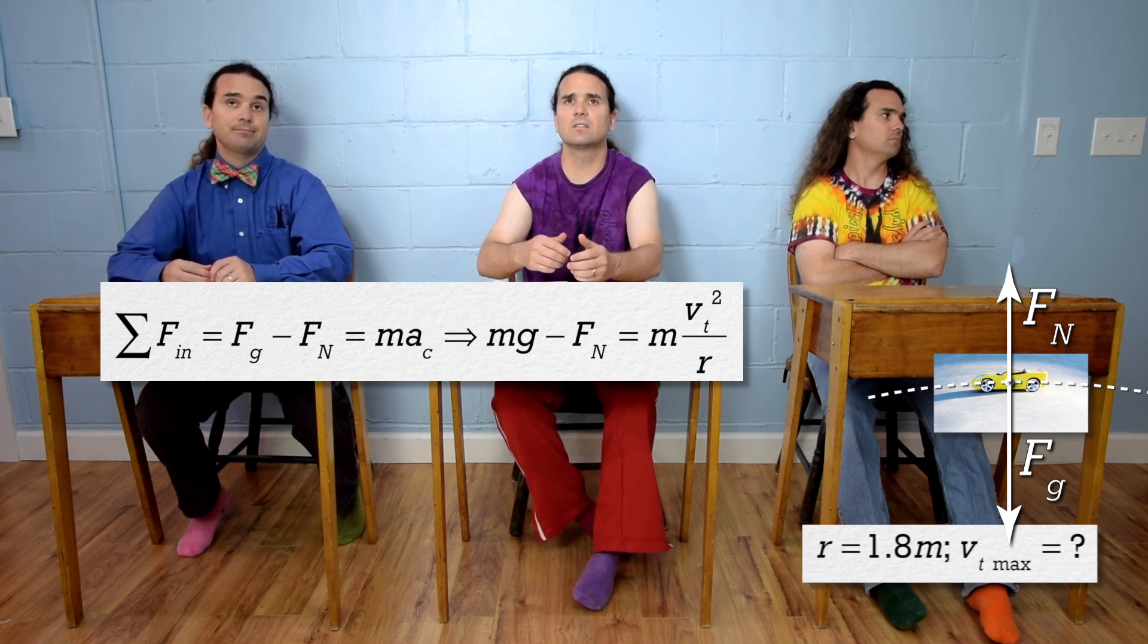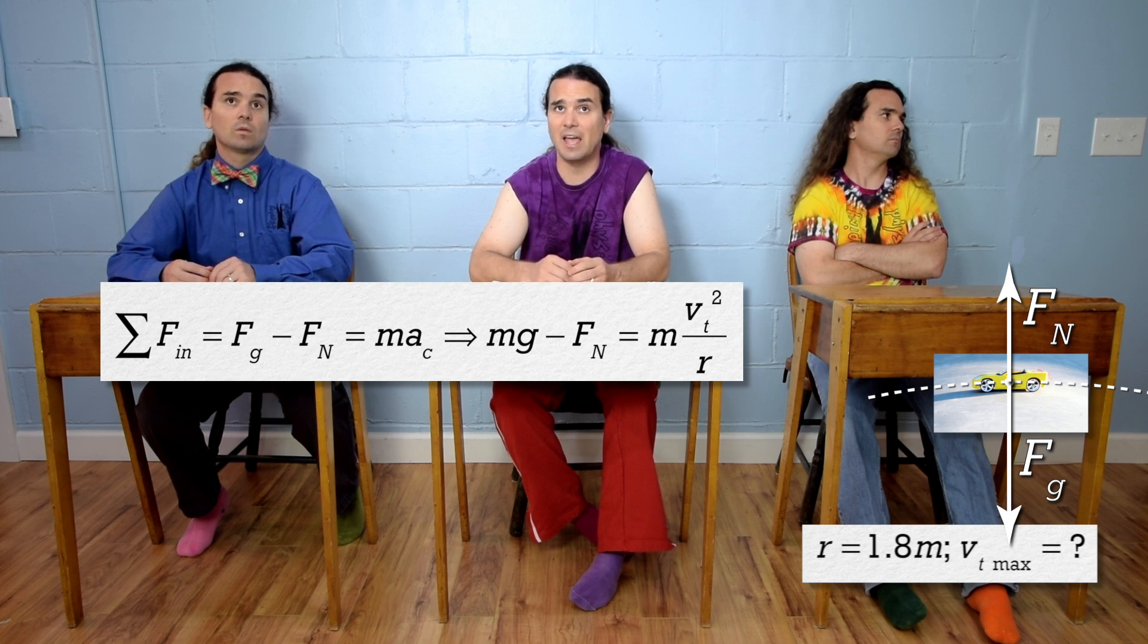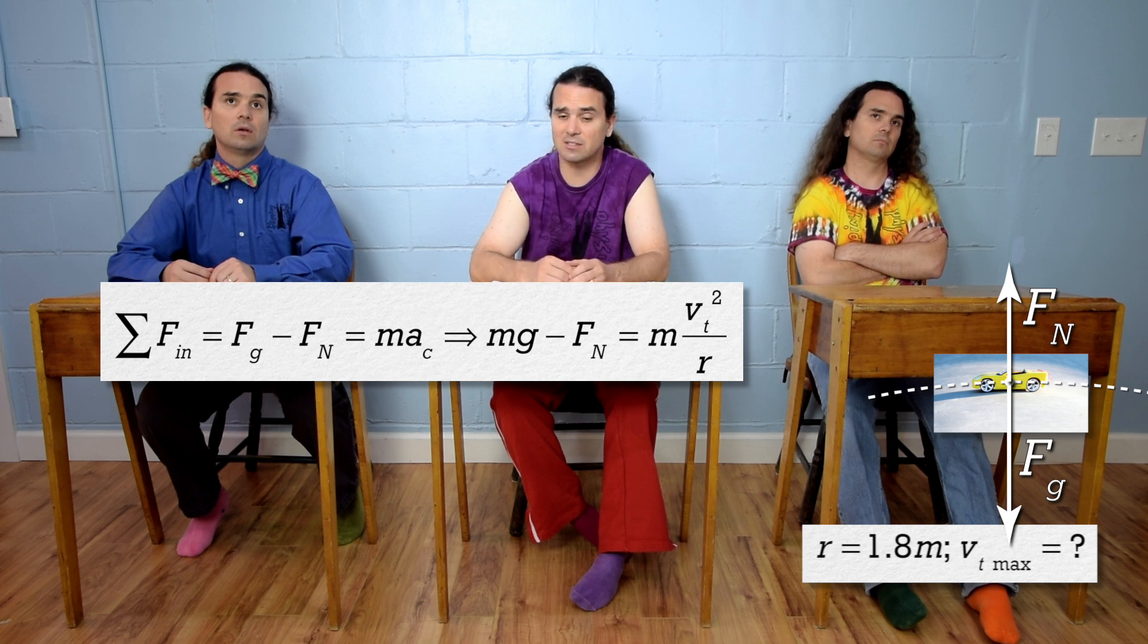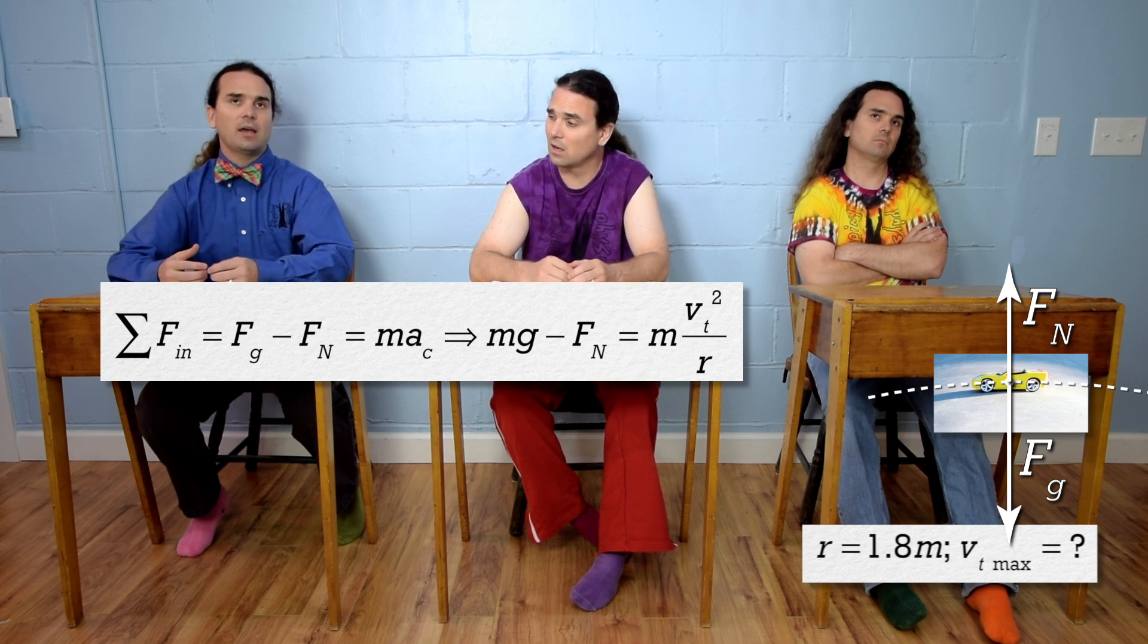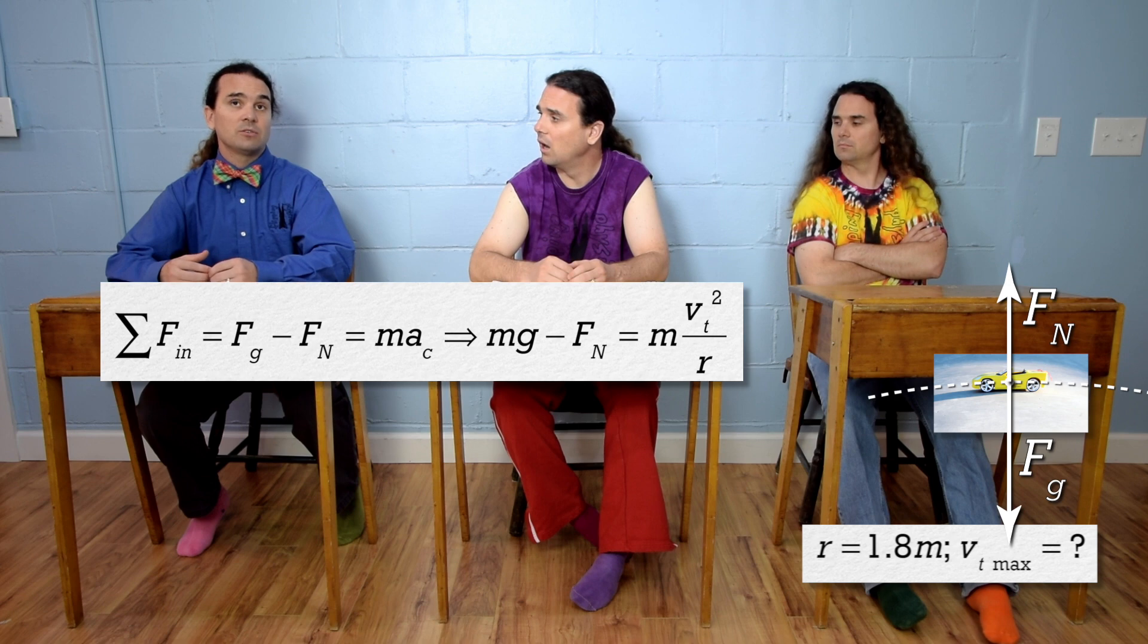Right, instead of using radius times angular velocity squared for centripetal acceleration, because we are solving for tangential velocity, not angular velocity. But I don't know what to do now.